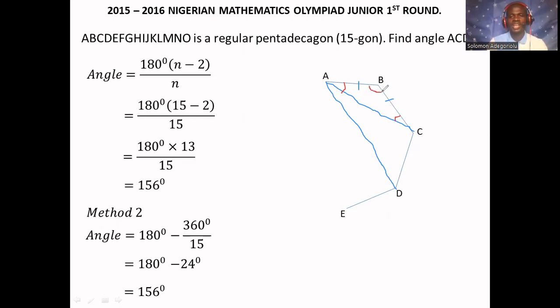This angle given here is 156 degrees. And we're dealing with isosceles triangle. If we subtract 156 degrees from 180 degrees, which is the sum of angles in a triangle, we'll be having 24. And because it is base angles of the isosceles triangle, and they are equal, we divide 24 by 2, and that will be 12. That means angle A here is going to be 12, and angle C as well is going to be 12.